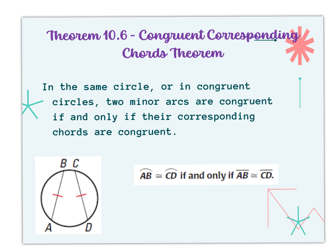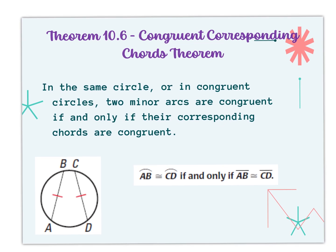That means you can do this backwards. If chord AB and chord CD are congruent, then the corresponding minor arcs formed by those chords are also going to be congruent. And it works the other way around: if I know that the arcs are congruent, then I know that the chords have to be congruent.